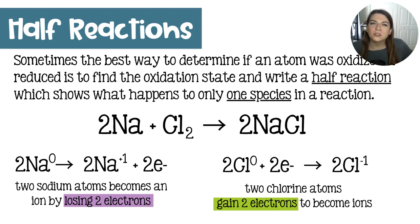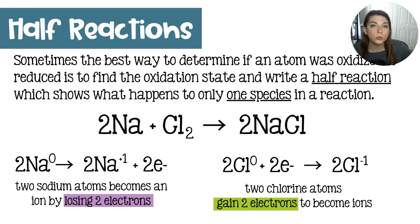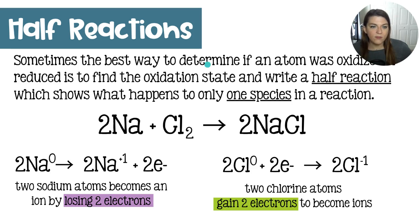Sometimes it's not so obvious. So in the tougher reactions, in order to know which is oxidized and which is reduced, it is best to write a half reaction, which shows what happens to just one of the species during a chemical reaction. So in this case, we have our big full chemical reaction, and I have dissected it out into the half reactions.